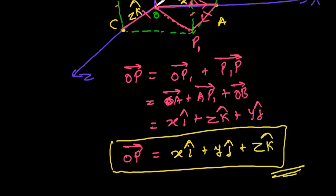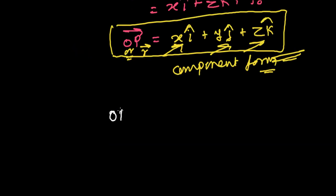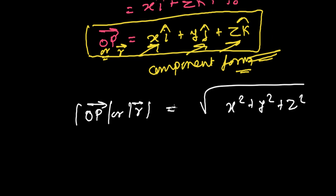This form of vector OP is called the component form. Sometimes OP is represented by r. Whether you represent it as OP or r in three-dimensional form, this is called the component form of a vector. The magnitude of this component form of vector OP or r is given by the square root of x² + y² + z². You can easily prove this — if you want, leave a comment and I'll make another video.